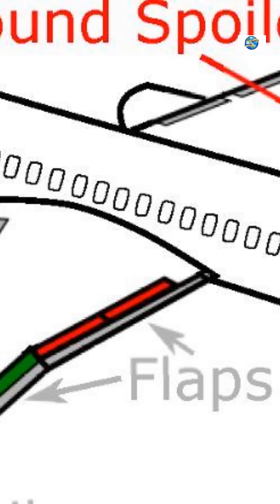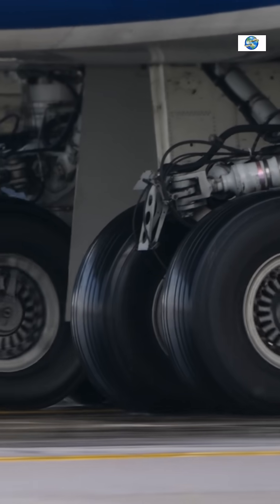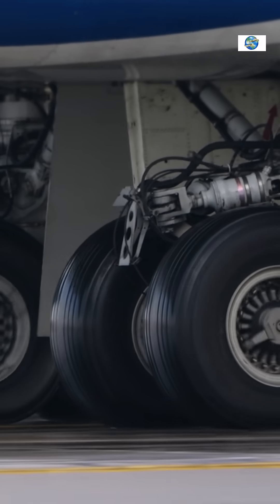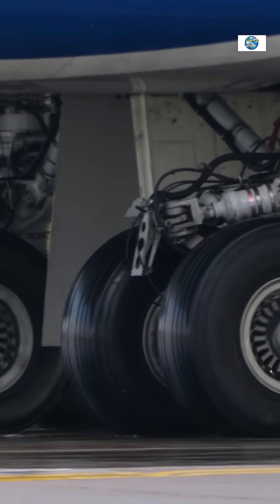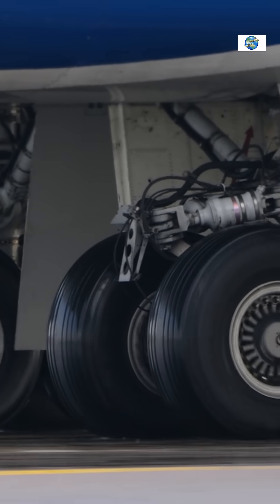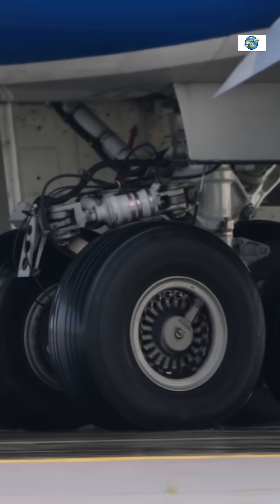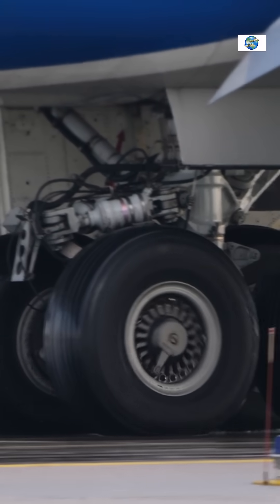Landing assistance: Upon landing, ground spoilers deploy automatically or manually to reduce lift on the wings. This forces the weight of the aircraft onto the landing gear, improving wheel traction for more effective braking and reducing the risk of skidding.